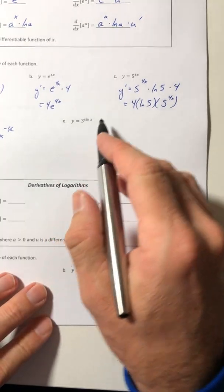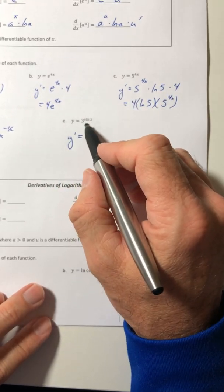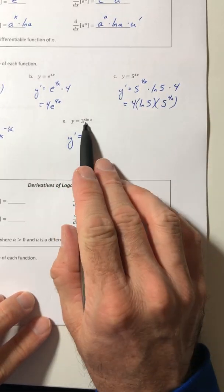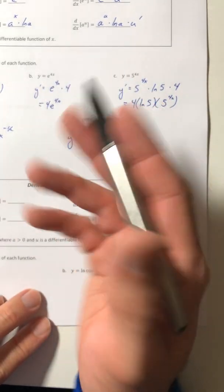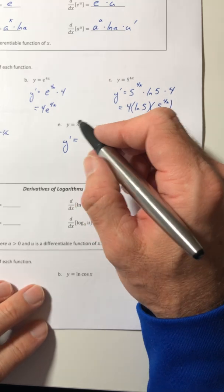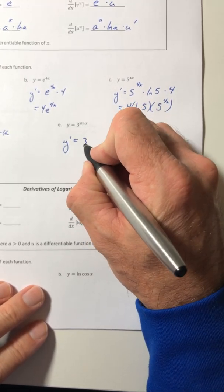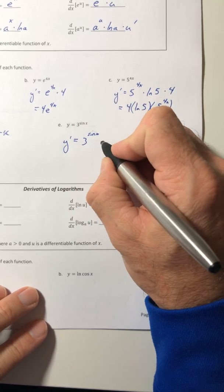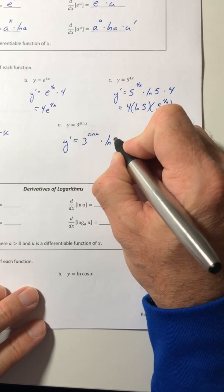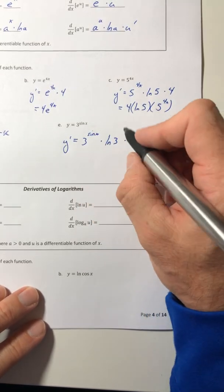Okay, part e. Three to the sine of x. Oh gosh, well don't panic because you've got a trig function in an exponential. Just follow everything else, just what you did before. So rewrite the function, multiply by ln of your base, then multiply by the derivative of your exponent.